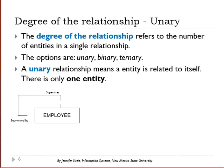There's also a term called the degree of the relationship, which refers to the number of entities in a single relationship. We have unary, binary, and ternary.